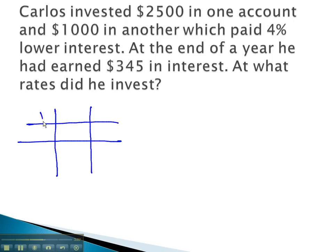In this problem, Carlos is investing $2,500 into the first account. The second account's only $1,000, but it's at a rate 4% less. This means we're subtracting from our unknown rate, 4%, or .04. The first account is that unknown rate.